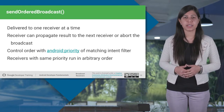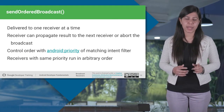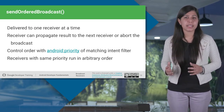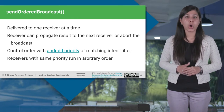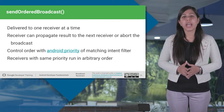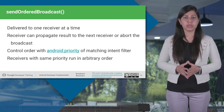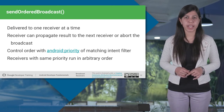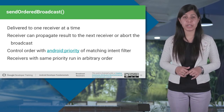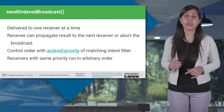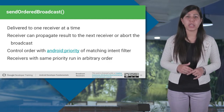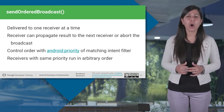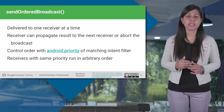sendOrderedBroadcast delivers to one receiver at a time. As each receiver executes in turn, it can propagate a result to the next receiver, or it can completely abort the broadcast so that it won't be passed to other receivers. The order of receivers can be controlled with the Android priority attribute of the matching intent filter. Receivers with the same priority will run in an arbitrary order. If you want to allow receivers to propagate results or abort the broadcast, you must send an ordered broadcast using sendOrderedBroadcast.